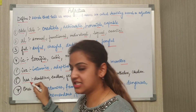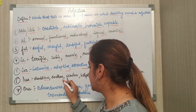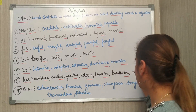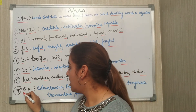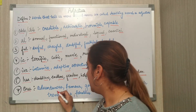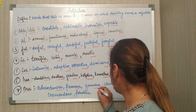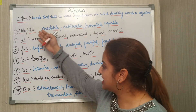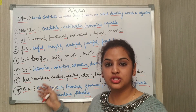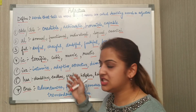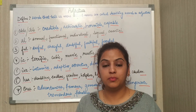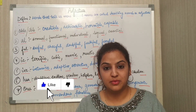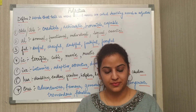Next is -less (L-E-S-S): doubtless, endless, fearless, helpless, homeless, breathless, careless. Last is -ous: adventurous, famous, generous, courageous, dangerous, tremendous, fabulous. Any word ending with these suffixes is straightaway an adjective. These are just a few examples — there are many more. I hope now all the concepts related to adjectives are clear to you. Please thumbs up if you like my video. If you have any doubt or any query, please do comment below. Thank you.